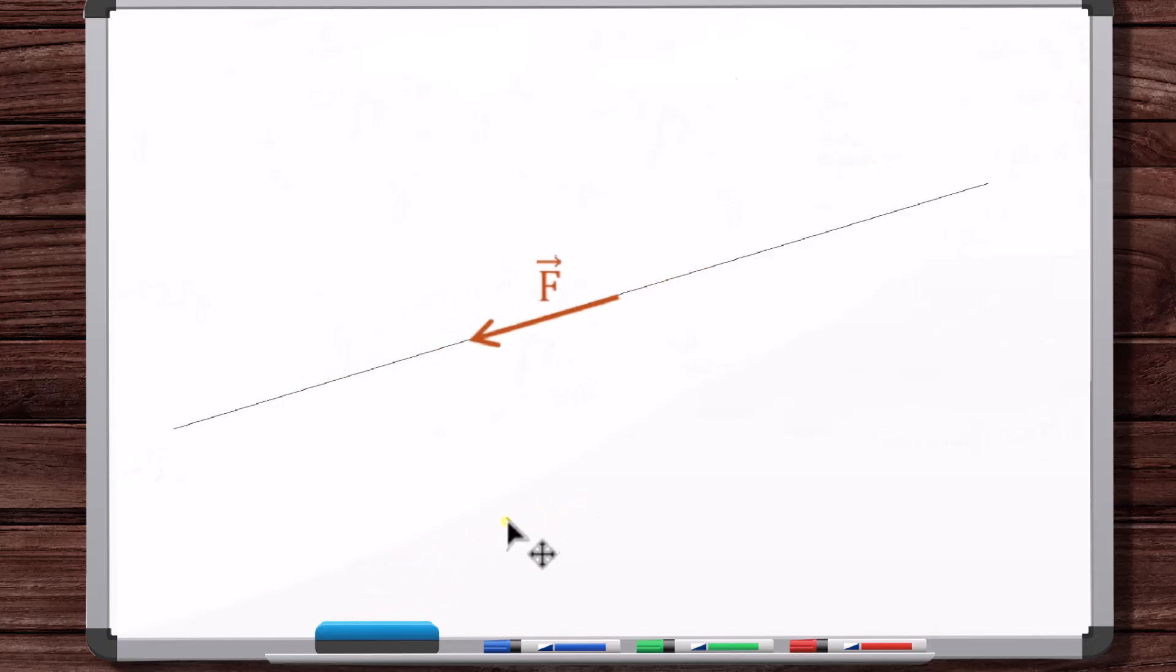So, but note, in all of these cases, fixed, sliding, free, we're not changing the vector. You obviously aren't allowed to change the vector without changing the problem. This is strictly about position and orientation of the same vector.